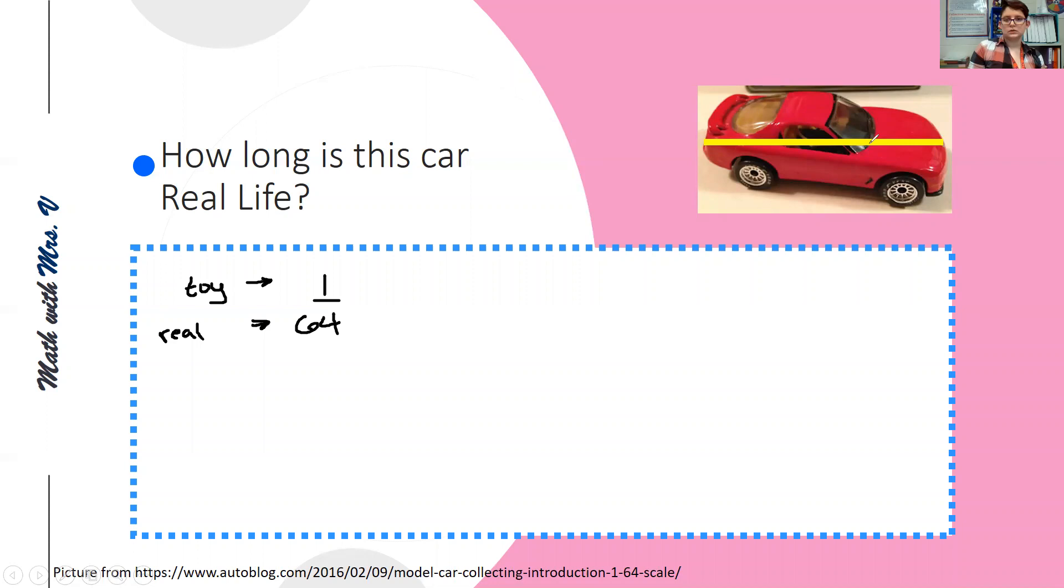So this car, the average length of a Matchbox or Hot Wheels is 3 inches. So I can use a proportion and put the actual length of the toy on top over x and then solve. So I'm going to cross multiply. So 1 times x is 1x, which we can write as just x. 64 times 3 gives us 192 inches. So in real life, the car this particular model is made after is 192 inches long. Or if we divide that by 12, it is 16 feet.